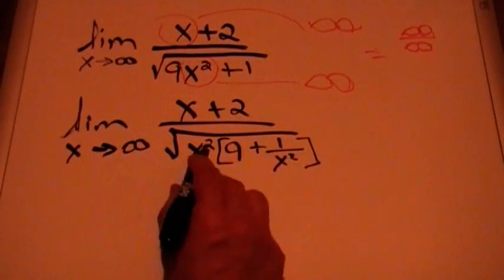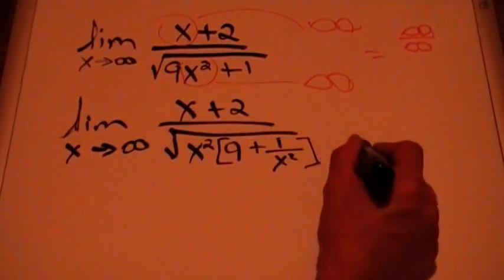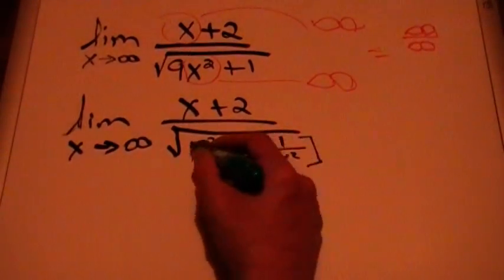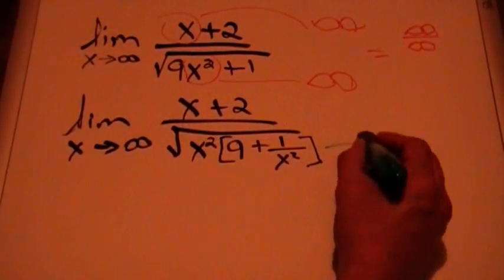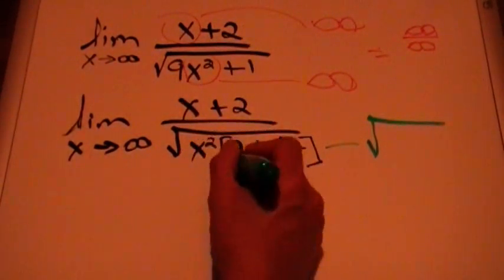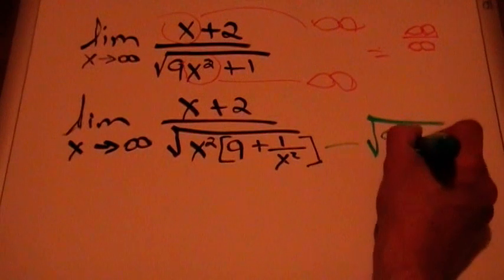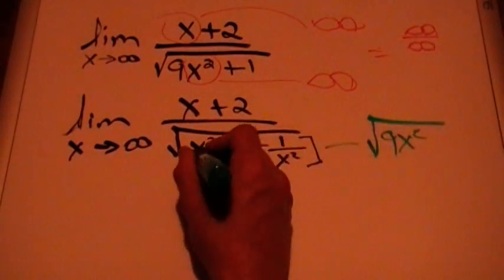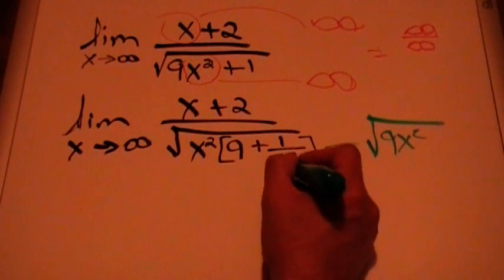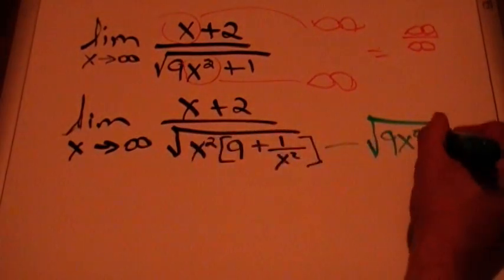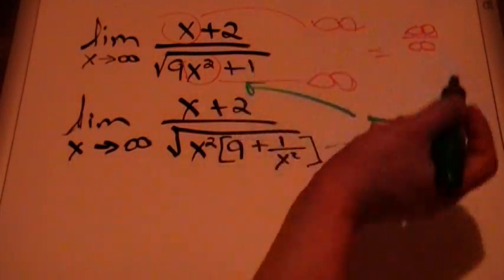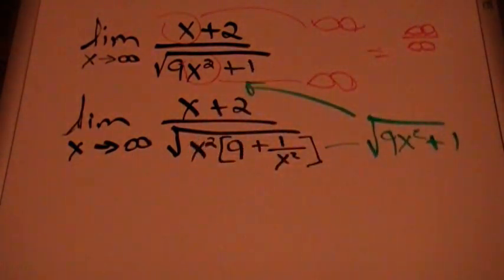Let me change colors. If we multiply this back, inside we get x² times 9 which gives 9x², and then x² times 1/x² equals 1. So this is equivalent to what we had before — I haven't changed anything so far. Let's keep working.